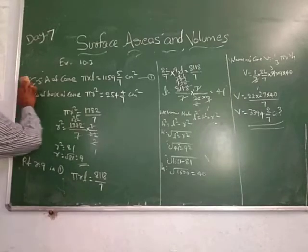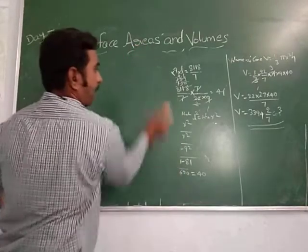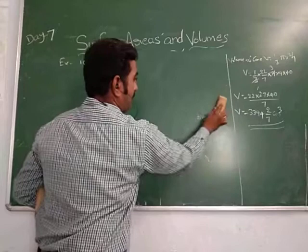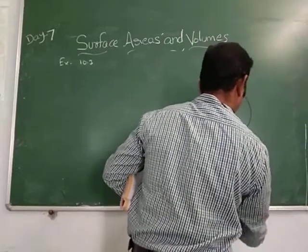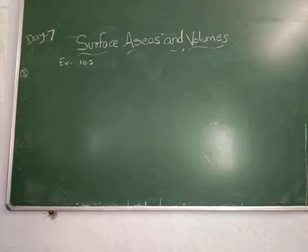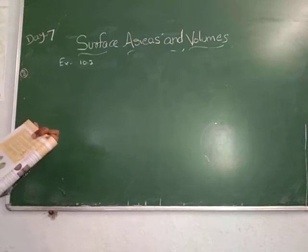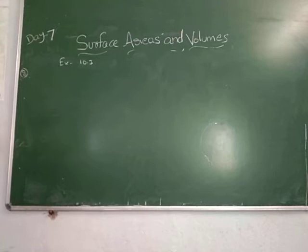Next, come to problem number 8. A tent is cylindrical to a height of 4.8 meters and conical above it. The radius of the base is 4.5 meters and the total height of the tent is 10.8 meters. Find the canvas required in square meters.